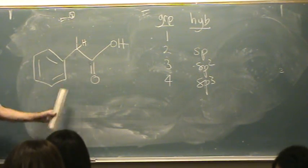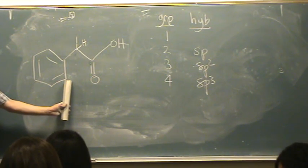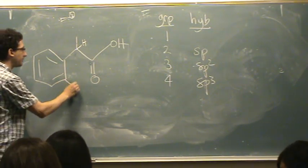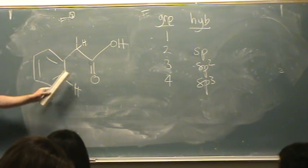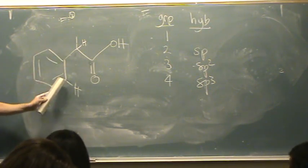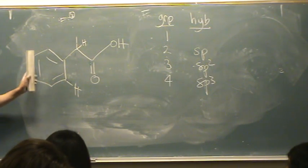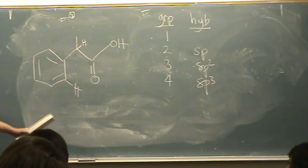That one's sp3. This one. Sp2 because there's a hydrogen not drawn in. There's a double bond, a single bond, and another single bond. So everything around the ring, everything around the ring. It's sp2.